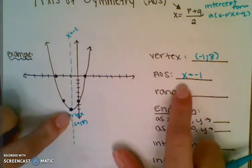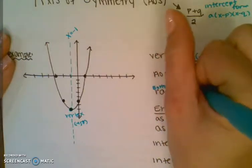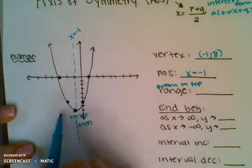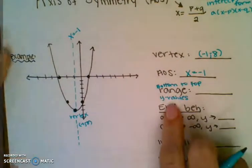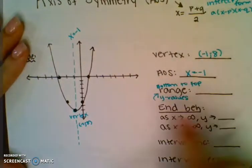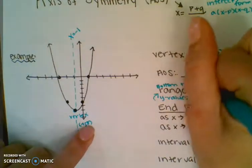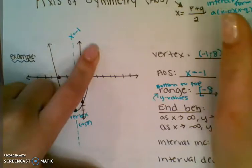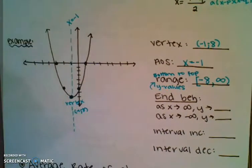Remember, your range is bottom to top. My range goes from bottom to top, and the bottom of my graph is my vertex. Your range always uses your y values. So my range: the bottom of my graph is negative 8, and since it's actually on my graph it gets a bracket. Then as I go up it goes up forever, so that's infinity. It's like my floor is at negative 8 and I have no ceiling — it goes up forever.